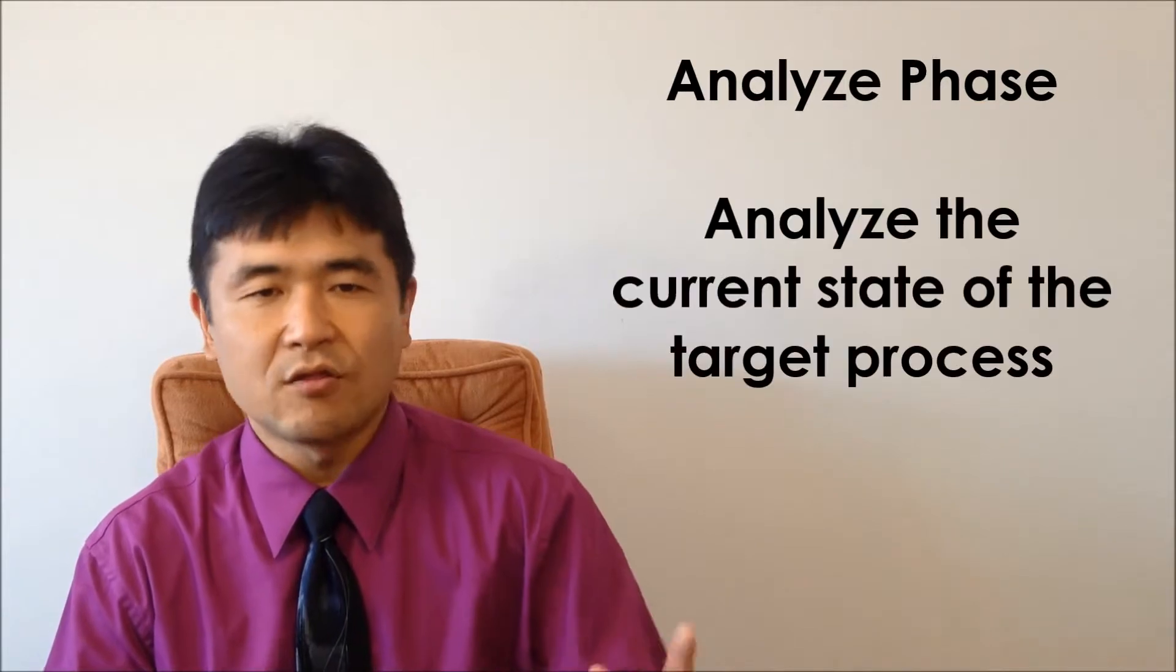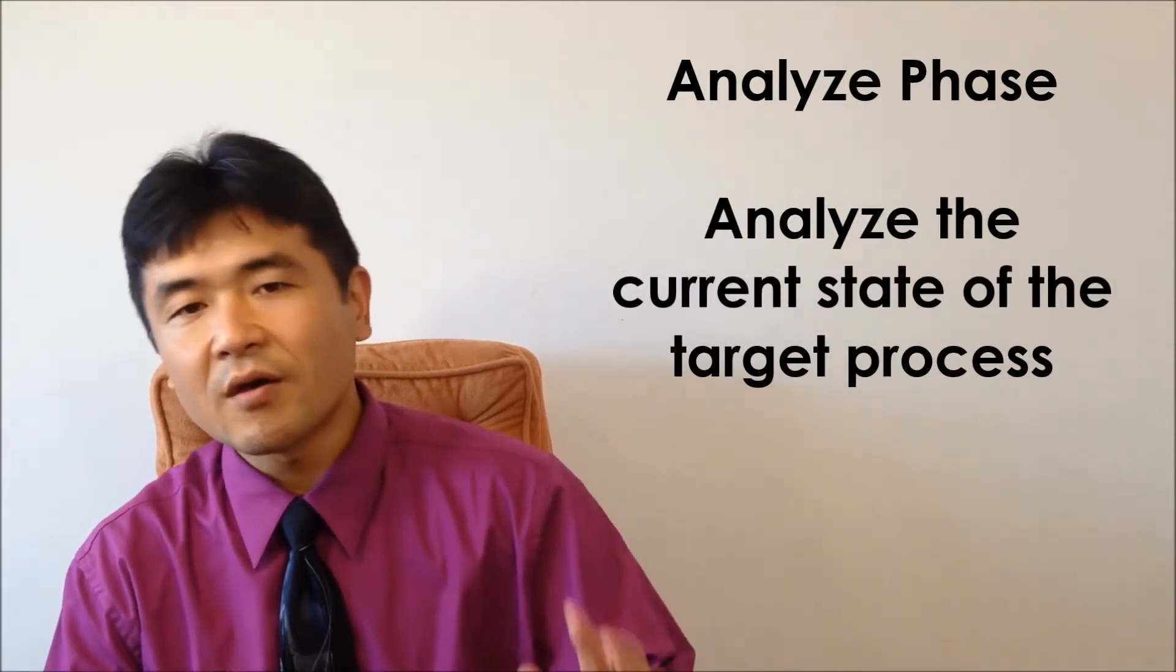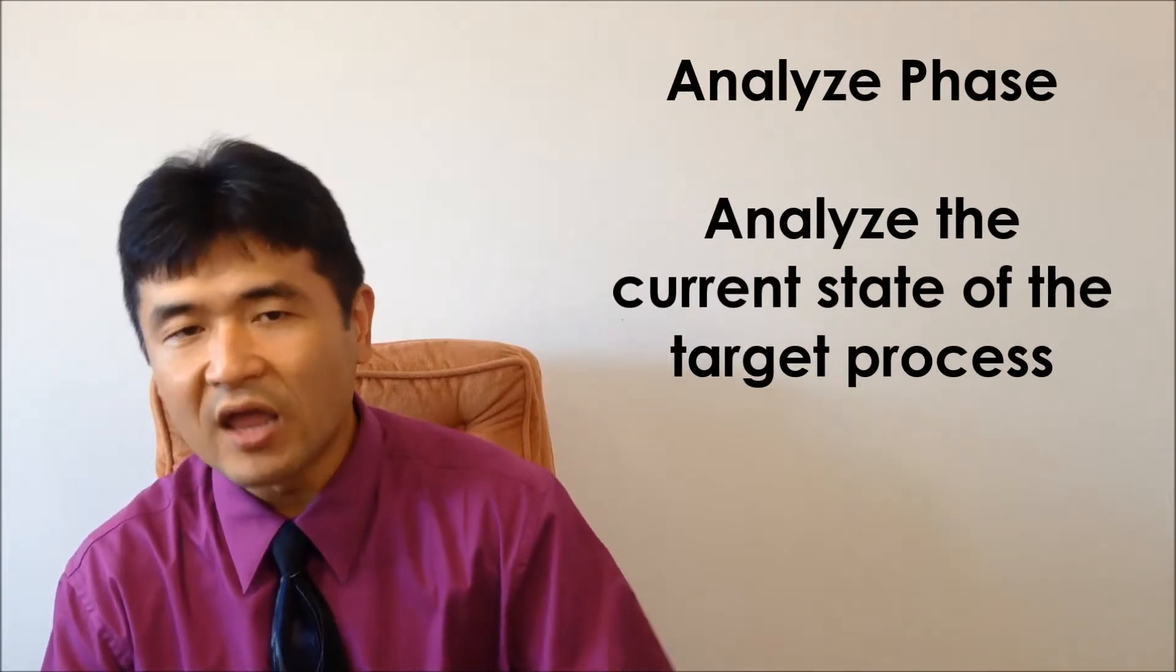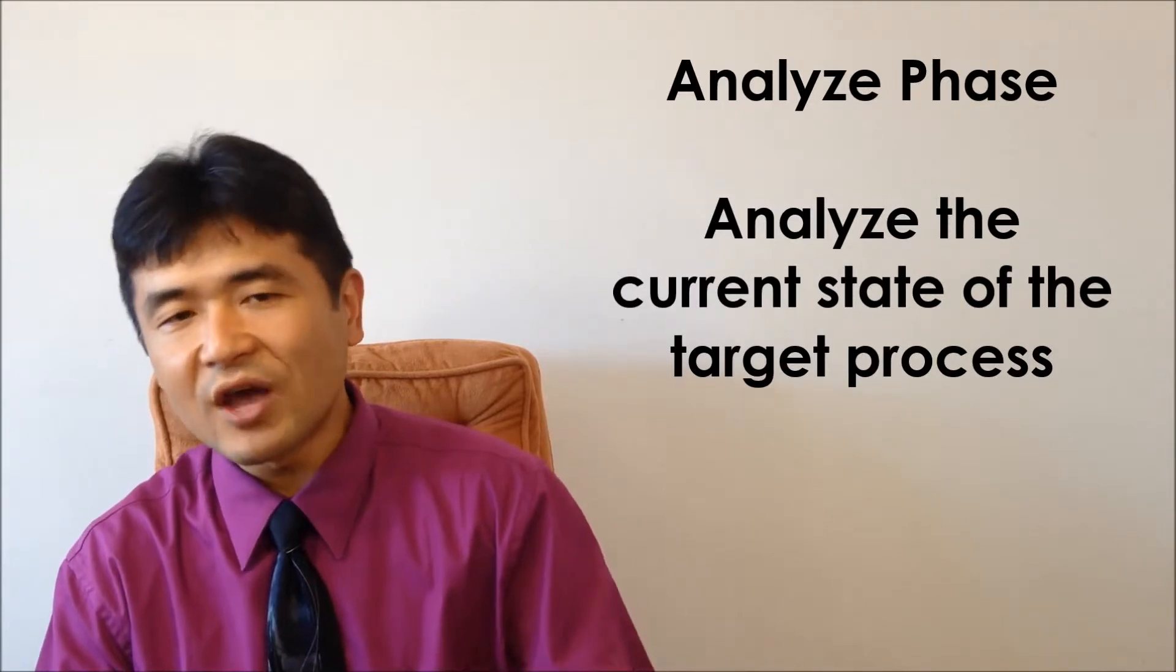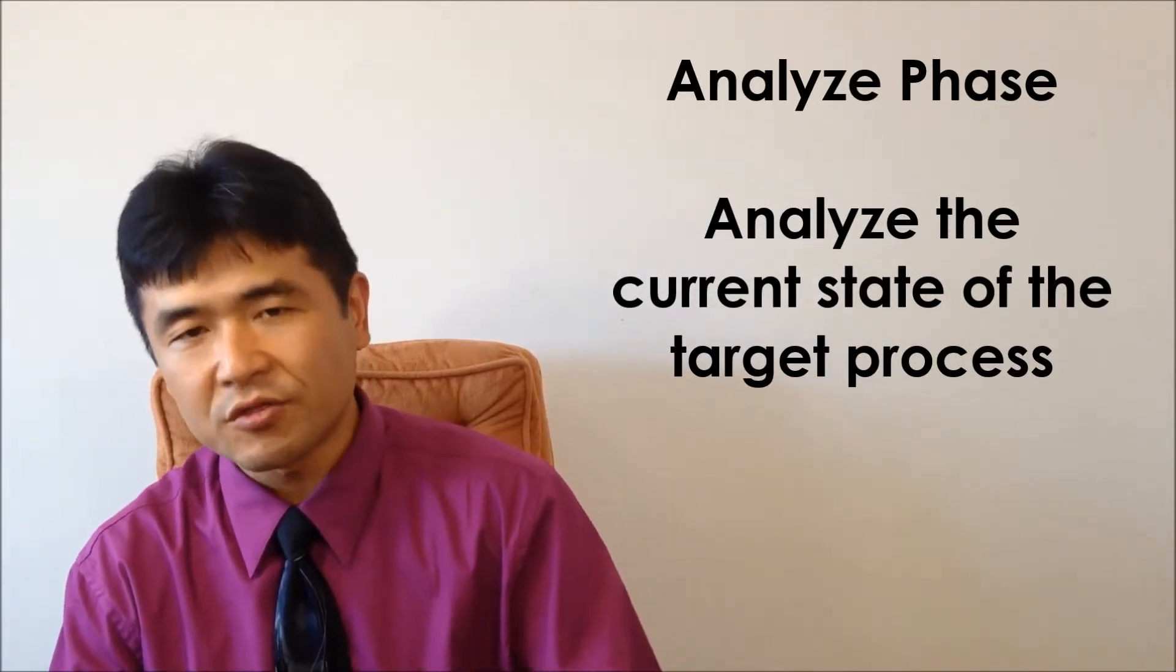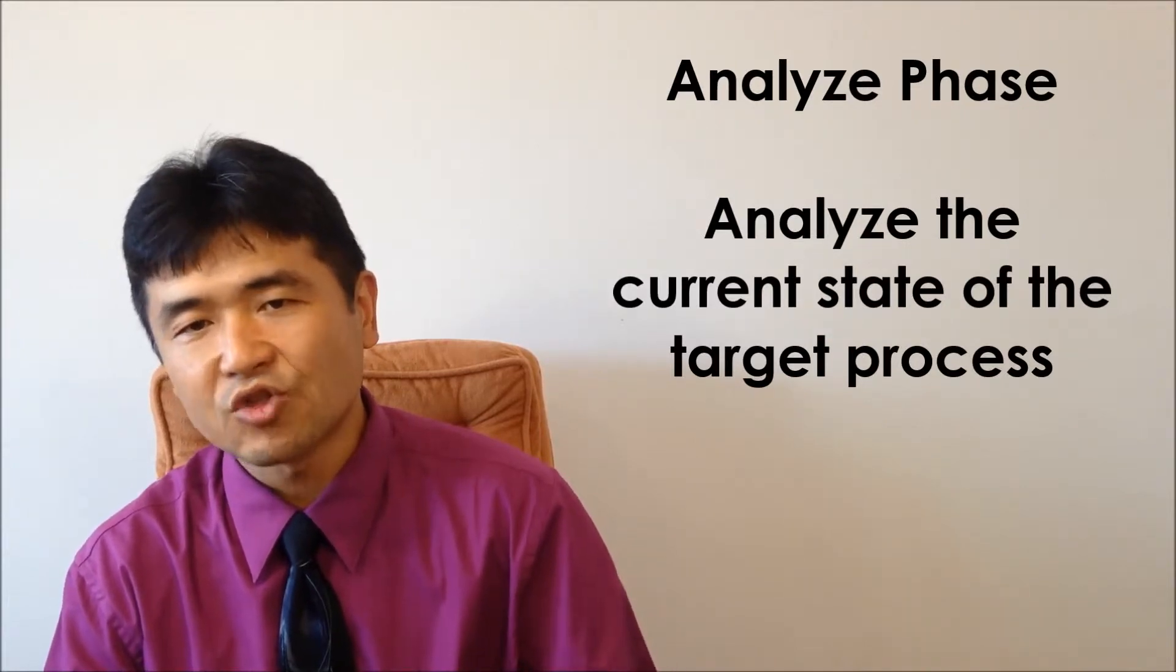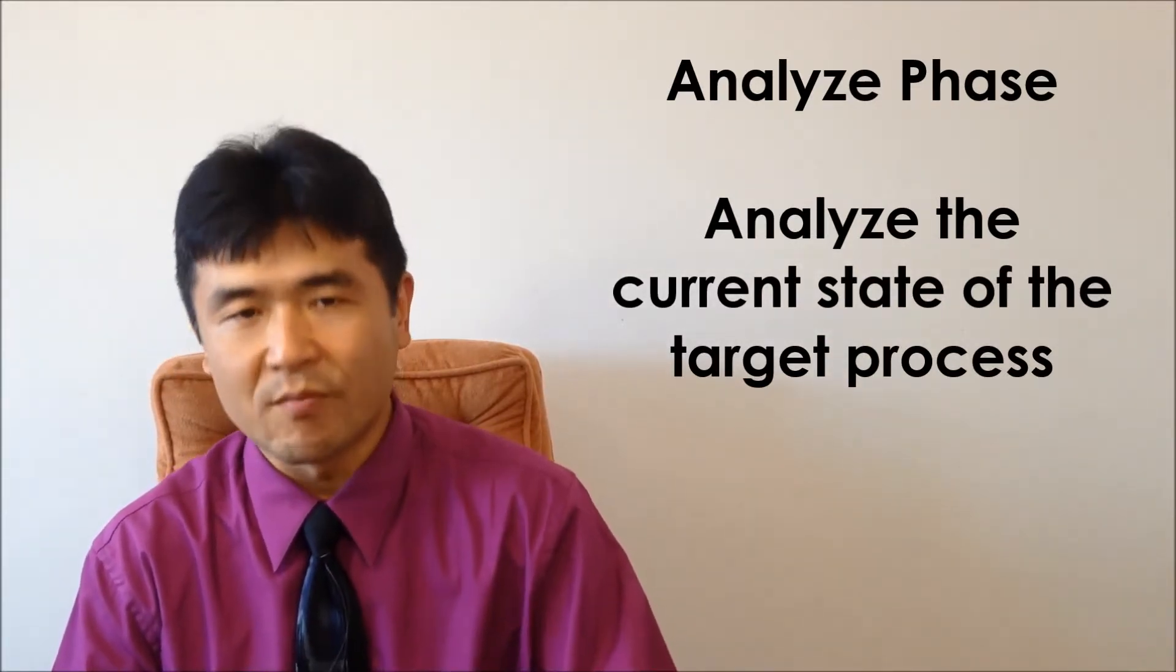The next letter A is for analyze phase. Here we will analyze the current state of the target process. Represent the process graphically by value stream map or flowchart. Conduct and make the value-added, non-value-added analysis. Do the 8 waste analysis and a Pareto chart in order to clarify issue areas and problems.